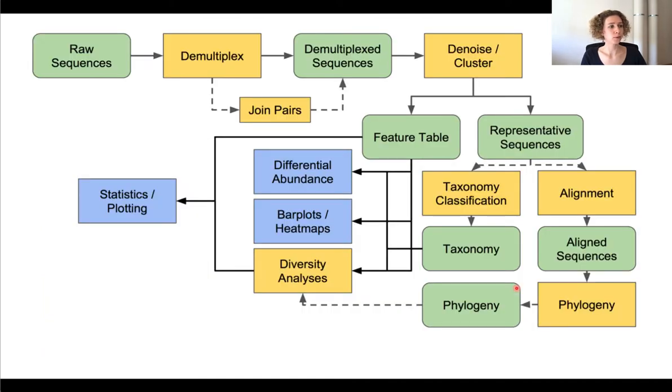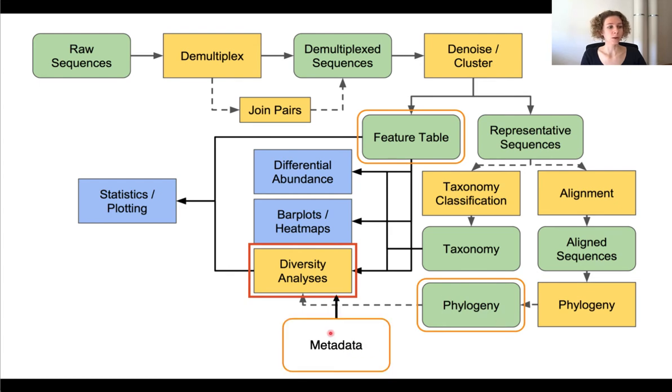So I hope it's more clear now to you how the diversity analysis is so central as a first starting point, why we use the feature table as an input, why it's good to have a phylogenetic tree and why we also use the metadata.